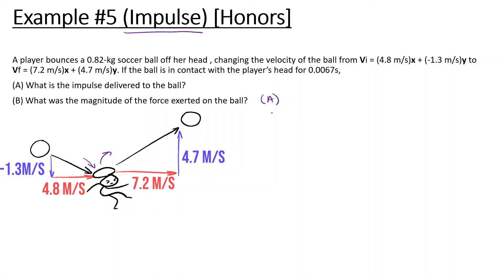First, we figure out the impulse in the x direction and the y direction. Impulse equals change in momentum: mass times velocity final minus mass times velocity initial. So mass is 0.82, velocity in x final is 7.2, minus 0.82 times velocity initial in x, which is 4.8.